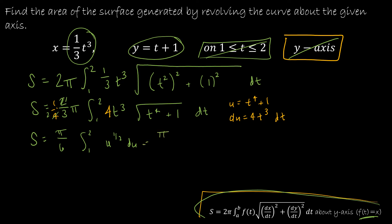This is going to give me π/6. And then u^(1/2) gives me u^(3/2). So that's (t⁴ + 1)^(3/2). And then divided by 3/2, which is times 2/3. Integrated from 1 to 2.